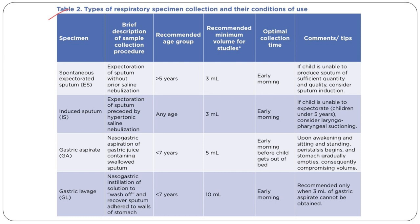If you don't collect the specimen correctly as pediatricians, then whatever algorithm you follow doesn't make any sense. For sputum you need 3 ml early morning. For induced sputum, 3 ml ideally early morning. For gastric aspirate you need 5 ml on an empty stomach. For gastric lavage, if you don't get enough on aspiration, you put in normal saline or distilled water and aspirate 10 ml. This is the most important thing — specimen collection has to be done correctly.